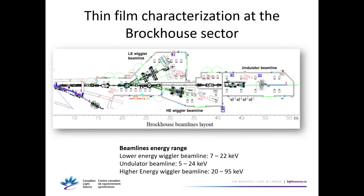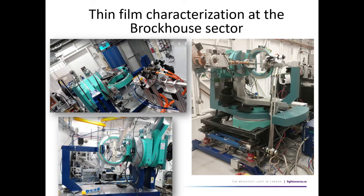Those are the examples for different grazing incidence techniques. Now about the Brockhaus sector — we are the phase three beamlines, a suite of three hard X-ray beamlines at the Canadian Light Source, with energies from 5 to 95 keV. There are several options here for thin films and many other applications, working in either the lower-energy wiggler beamline or the undulator beamline.